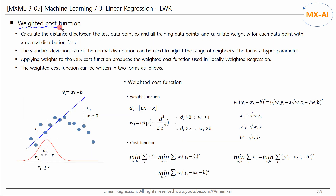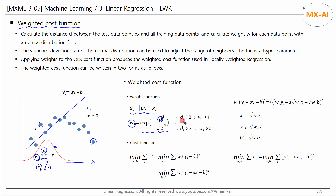Next, let's create a weighted cost function for LWR. Calculate the distance d between the test data point px and all training data points. This data point is far away from the px. We then calculate the weight of each data point using a normal distribution with mean px. The distance between the test data point px and the training data point xi can be written as follows. And the normal distribution of this distance is the weight for the data point xi. As d approaches 0, w approaches 1, and as d approaches infinity, w approaches 0. The data points farther away from the px have lower weights. We then apply the weights w to the OLS cost function. In this way, the data points farther away from the px will not affect this line.